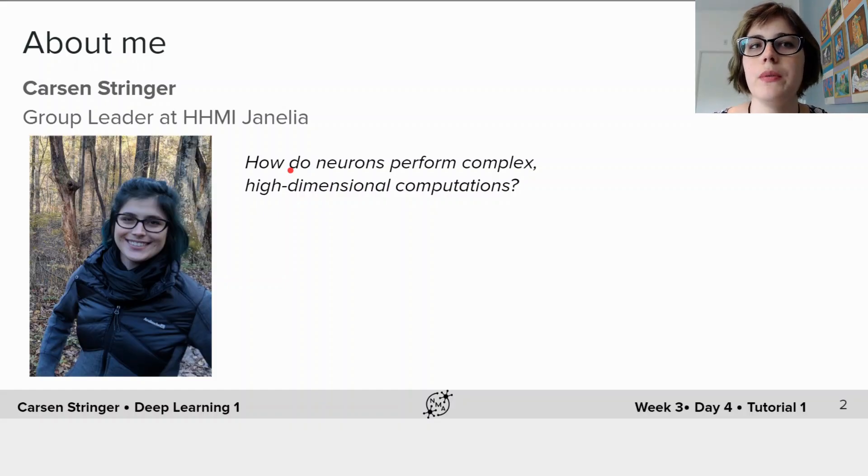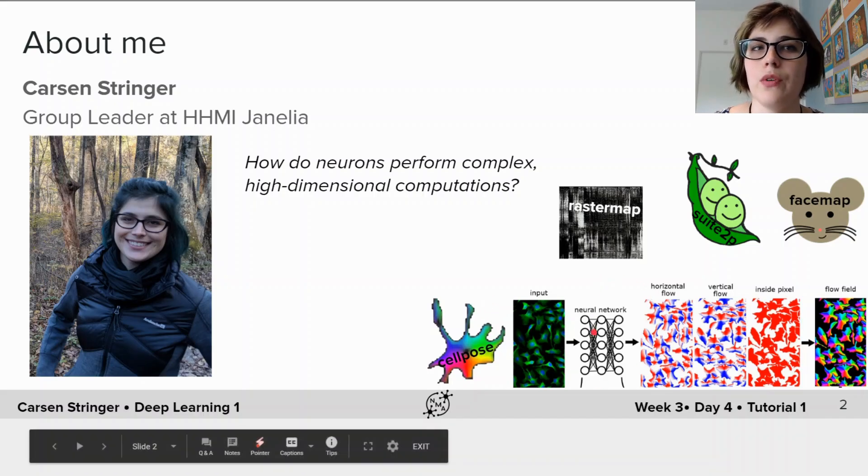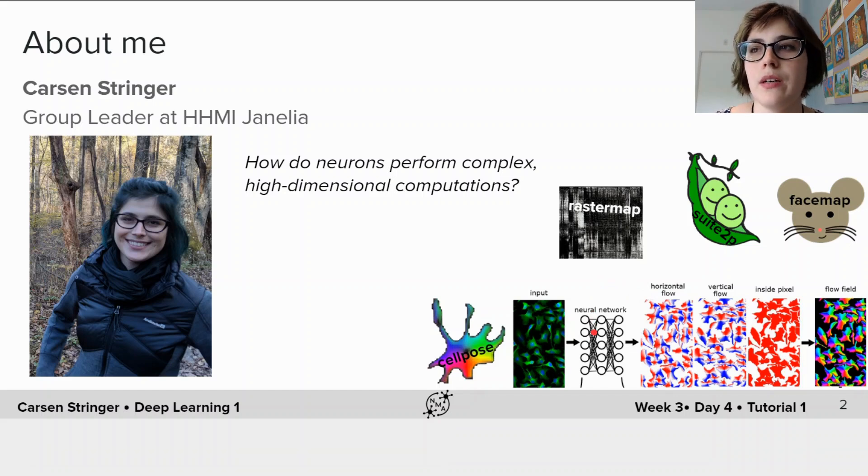I'm Carson Stringer and I'm a group leader at HHMI Janelia Research Campus. I'm trying to figure out how neurons perform complex high-dimensional computations such as object recognition and object segmentation. To answer this question, I've worked on a number of software packages to process and visualize neural activity. One package I've developed called Cellpose uses a deep neural network to perform cellular segmentation. Using deep networks to process images will be talked about more in the outro by Michelle Johnson.